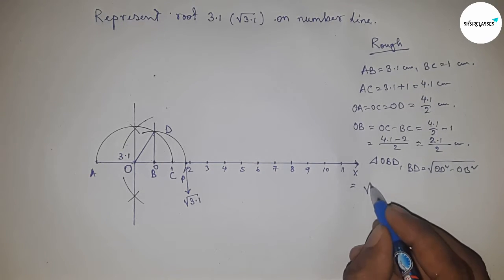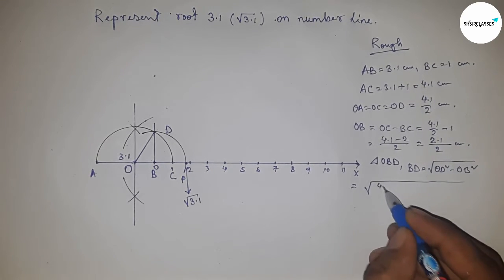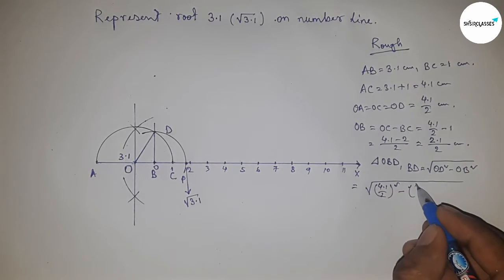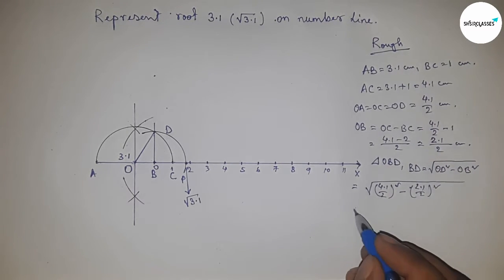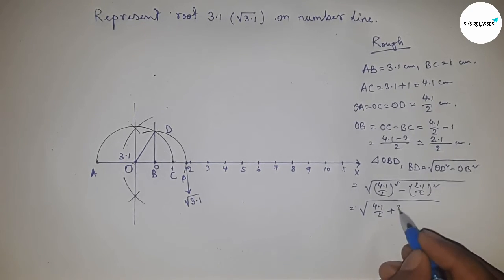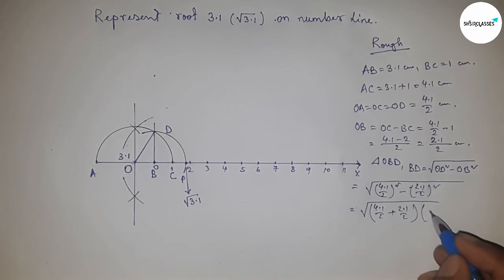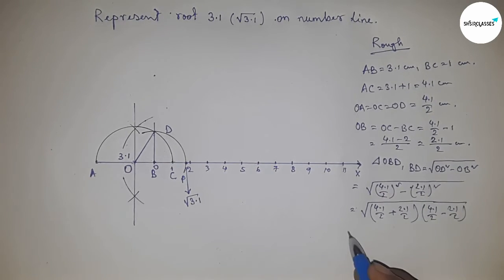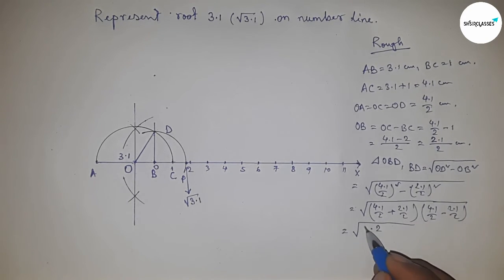Putting the values of OD and OB, this is 4.1 by 2 whole squared minus 2.1 by 2 whole squared. Applying the formula a squared minus b squared equals (a plus b)(a minus b), this becomes 6.2 by 2 times 2.2 by 2.